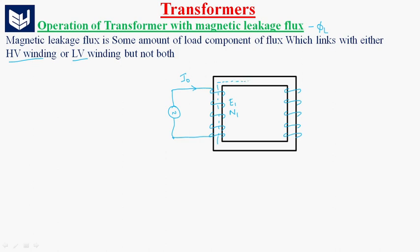Some amount of flux produced in the primary winding will link with the secondary winding. Let us say phi is the flux flowing through the magnetic core. Now, to the secondary winding, let us assume a load L is connected. Whenever the load is connected, some amount of current will flow — that is load current I2. Whenever I2 flows, it results in production of phi2 flux.